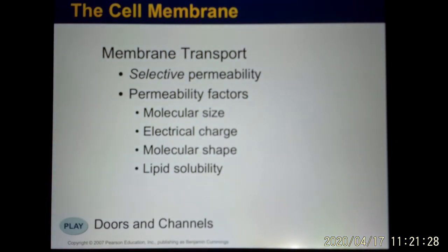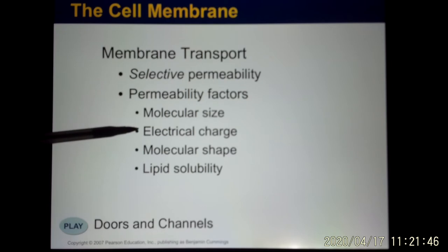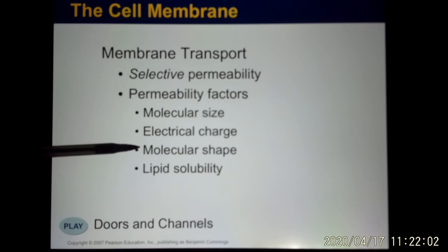This table shows the different functions of membrane proteins. The cell membrane has selective permeability — it only allows certain molecules to move through. Permeability depends on molecular size (smaller molecules pass more easily), electrical charge (uncharged molecules pass more easily, while ions have difficulty), molecular shape, and lipid solubility. Because the cell membrane is made of phospholipid, lipid-soluble molecules pass through more easily.